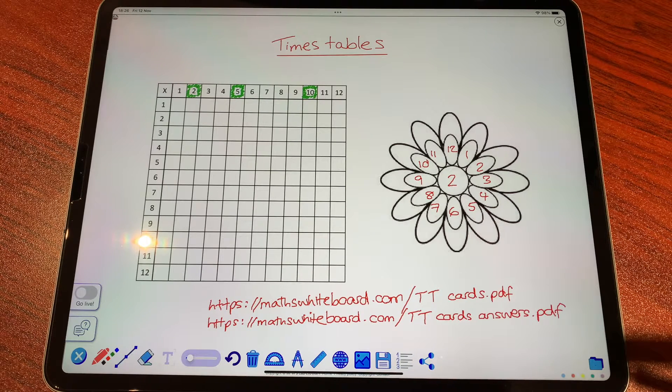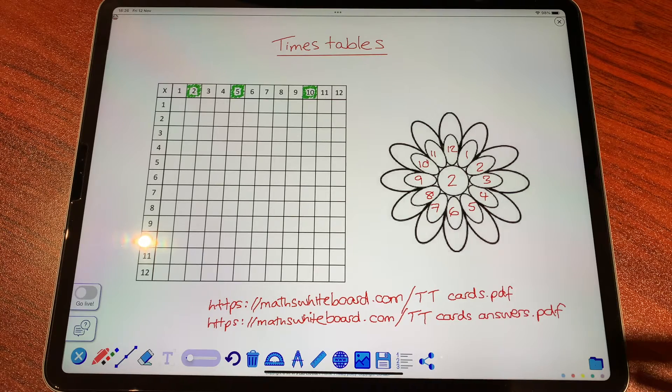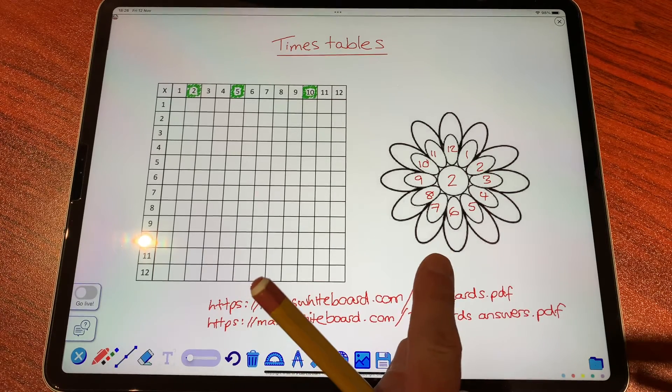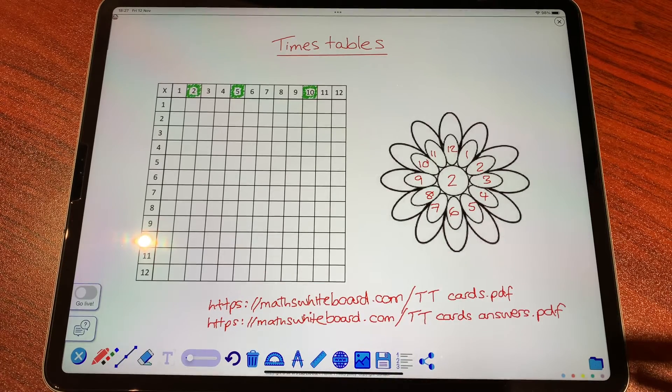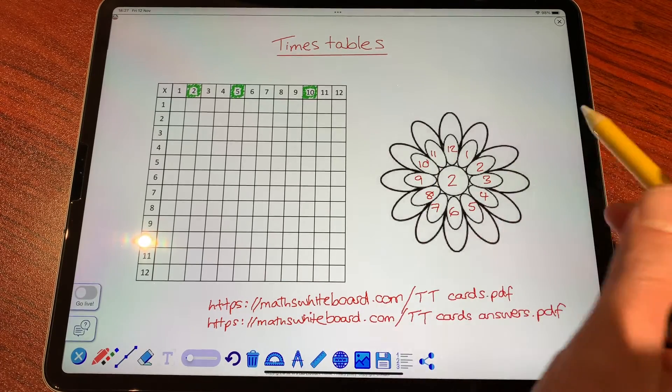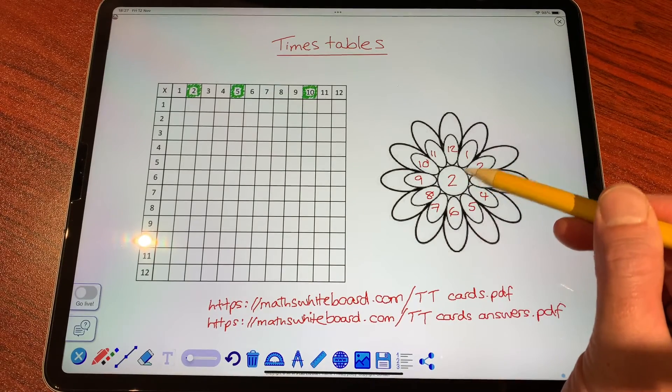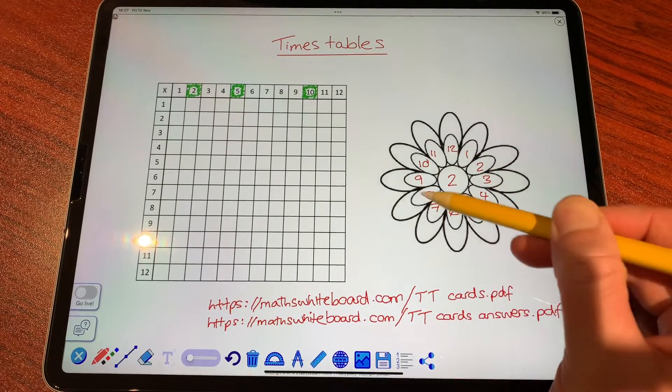I'm going to go through three ways that you can learn your tables. One is through a diagram called a Waldorf multiplication flower. If I'm learning my 2 times table, we place a 2 in the centre and the numbers 1 to 12 on the inner circle of petals.